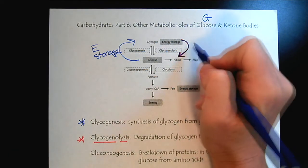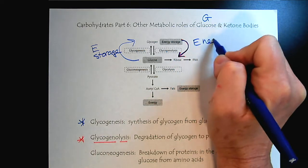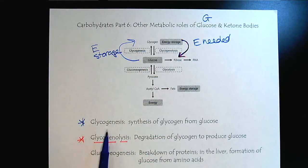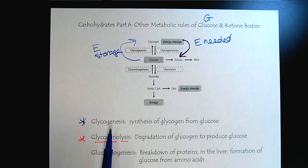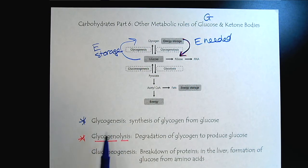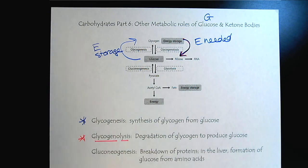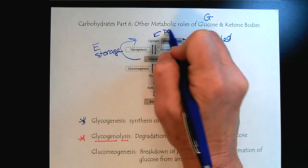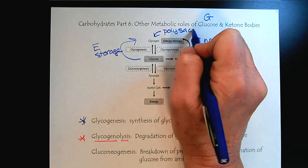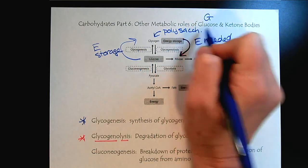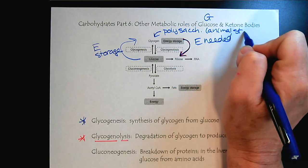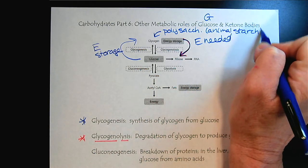So then we have glycogenolysis, when energy is needed. Remember, glycogen is basically animal starch — that might be helpful to write in. It's a polysaccharide, and you can think of it as animal starch, how we store sugar.